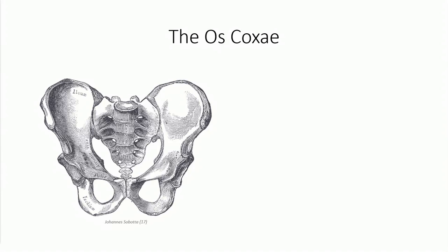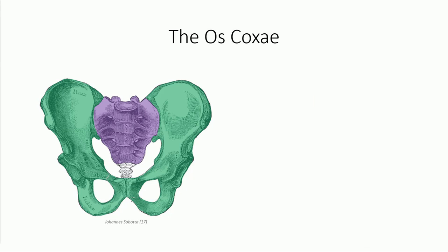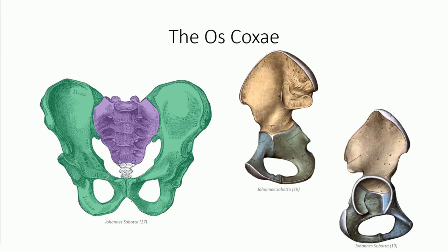The os coxa, or innominate bone, forms the bony pelvis. We previously identified the sacrum as the keystone of an arch; the os coxa serves as a wedge-shaped stone forming the supralateral portion of the arch. It's actually made up of three separate bones that fully fuse in the third decade. The view of a child's pelvis, where the bones are still separated by cartilaginous matrix, gives you a better idea of the distinction between the three bones.